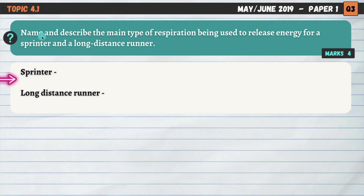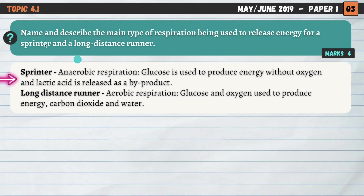So if you don't understand a question, watch the relevant summary video, then come back and attempt it. The question asks you to name and describe the main type of respiration being used by a sprinter and a long distance runner. All we need to do is name the main type of respiration being used by each athlete and then describe each of those two types.